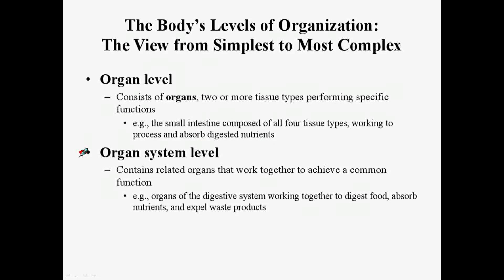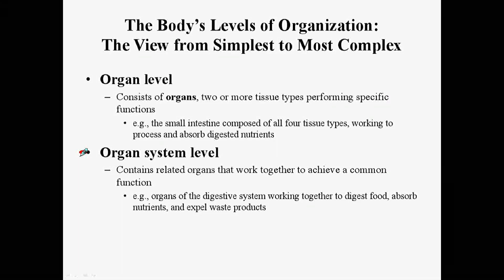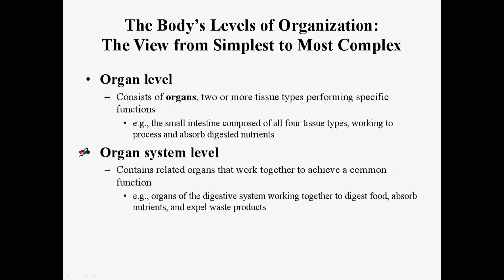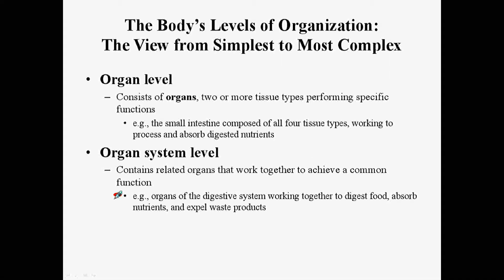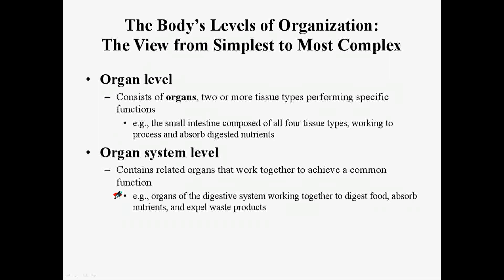The organ system level is where all of the organs work together to perform a common function or set of functions. For example, using the small intestine as the organ — if you look at all of the intestines, you have the digestive system, and it all works together to digest food, absorb the nutrients, and expel the waste products.